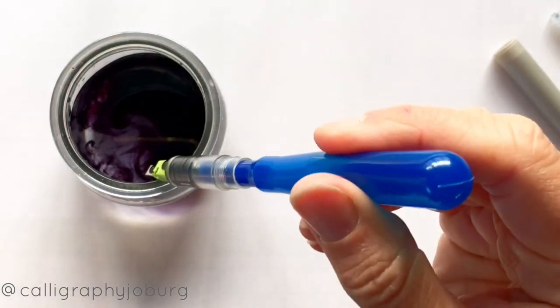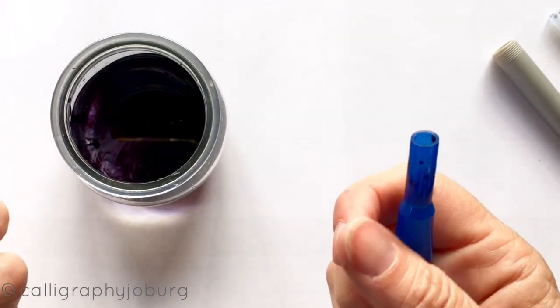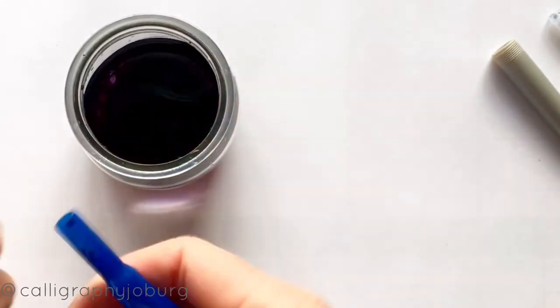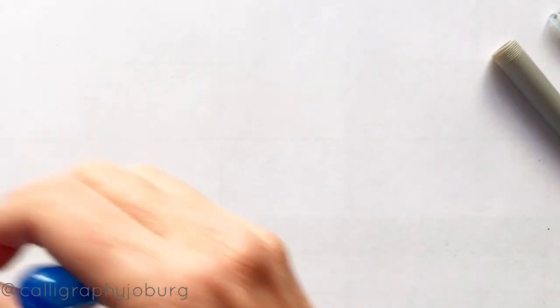You can then dry it off. Once you've done it a few times, you can run the end of your pen through some water. You can see how much ink has gone into that water just from that one little wash. So that's a great easy way to clean out your pen.